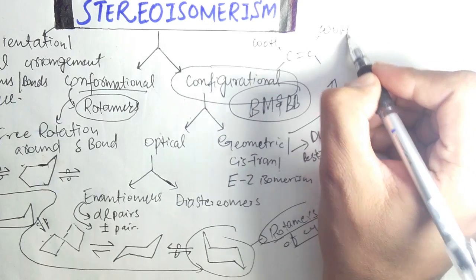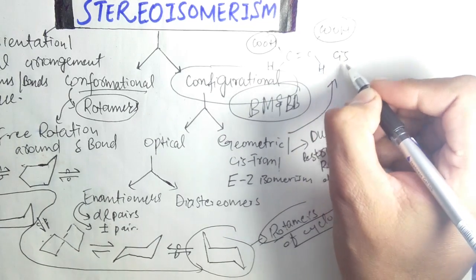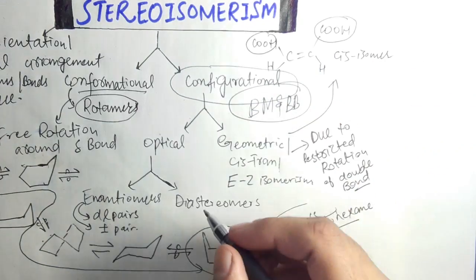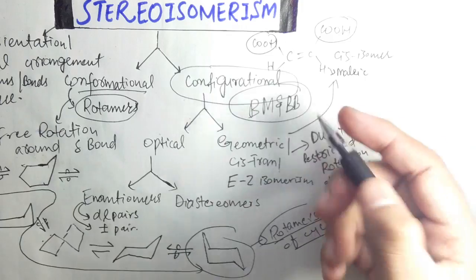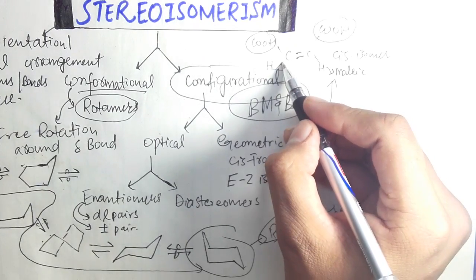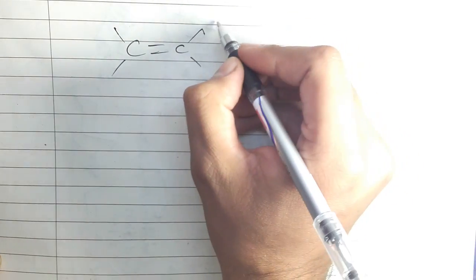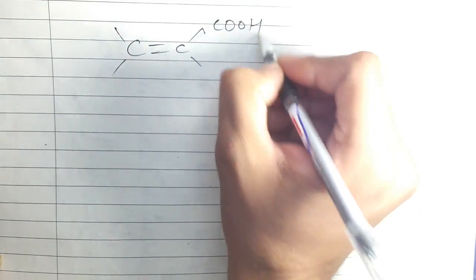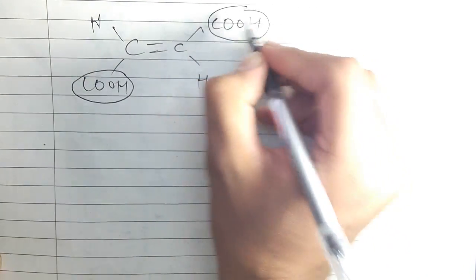When the same functional groups lie on the same side of the double bond, maleic acid is the cis isomer. Fumaric acid represents the other configuration and is considered the trans configuration, which is the E isomer.